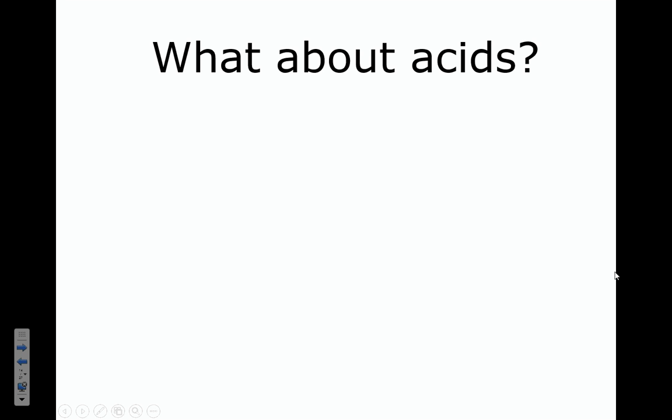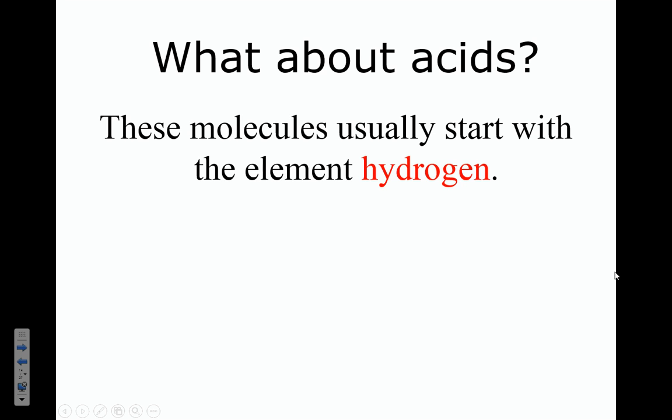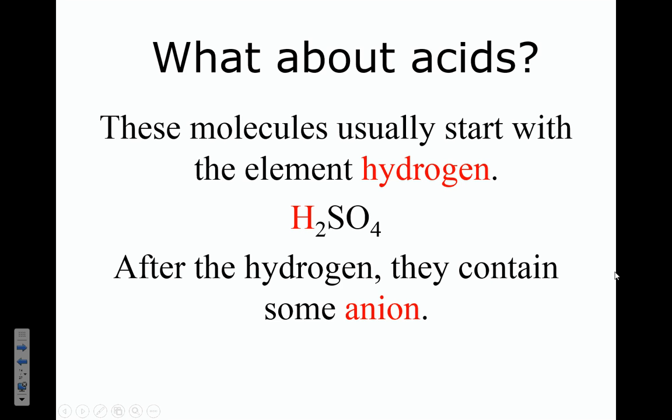Acids all have ionizable hydrogen. That's why they make the water acidic — because they're donating a hydrogen ion, an H+ ion, to water. So our dead giveaway that we're talking about a molecular acid is that it's going to start with the element hydrogen, because that's how we indicate it has ionizable hydrogen. In H2SO4, notice it starts with hydrogen. After the hydrogen, they contain some kind of anion — in H2SO4, after the H, we have SO4, the sulfate anion.